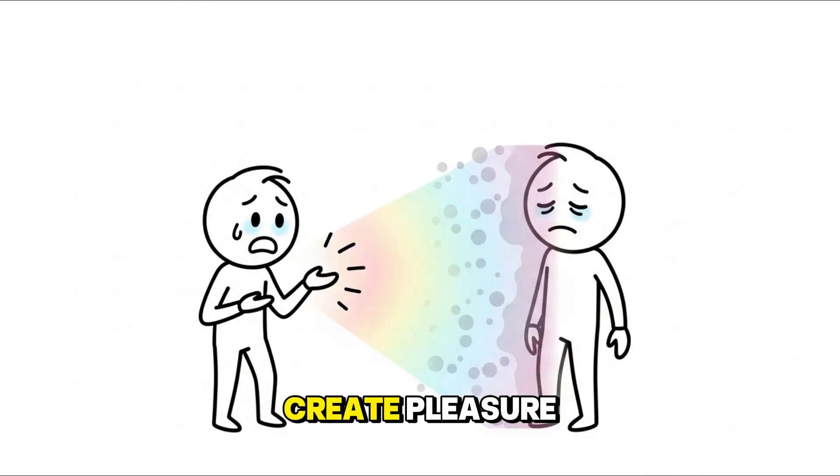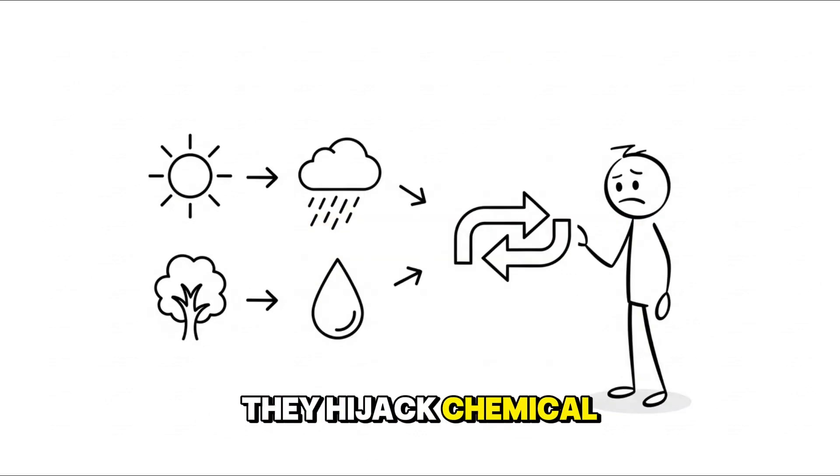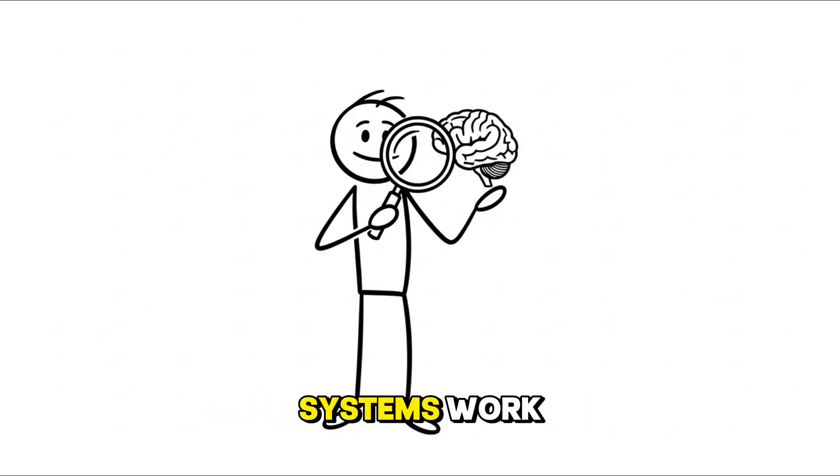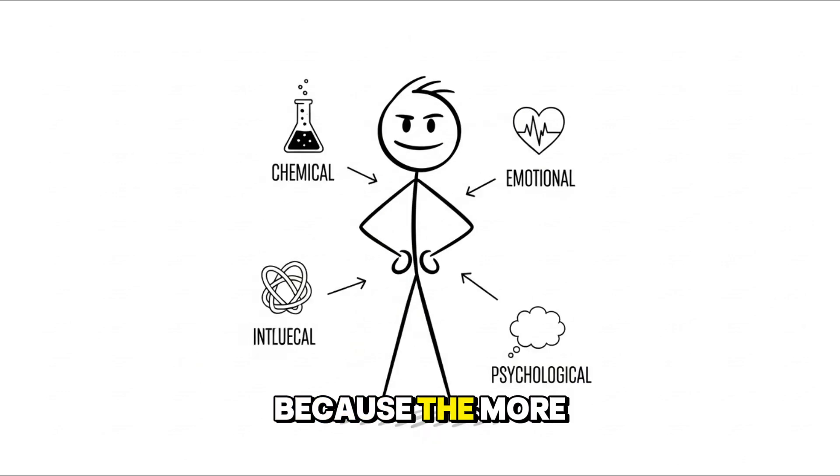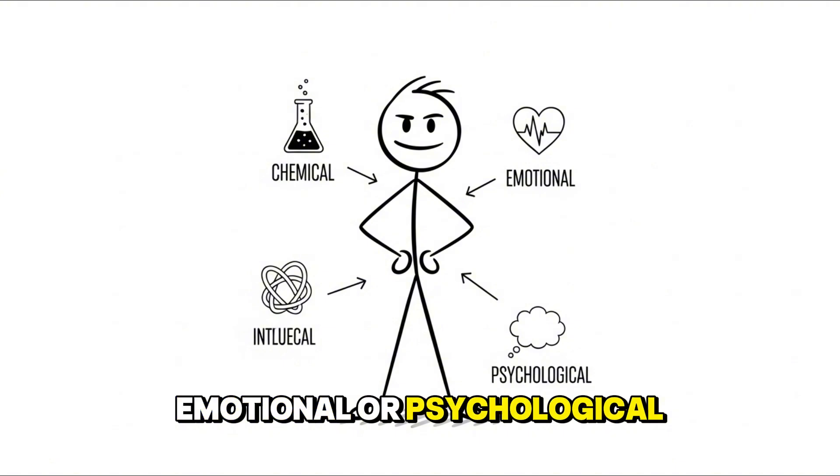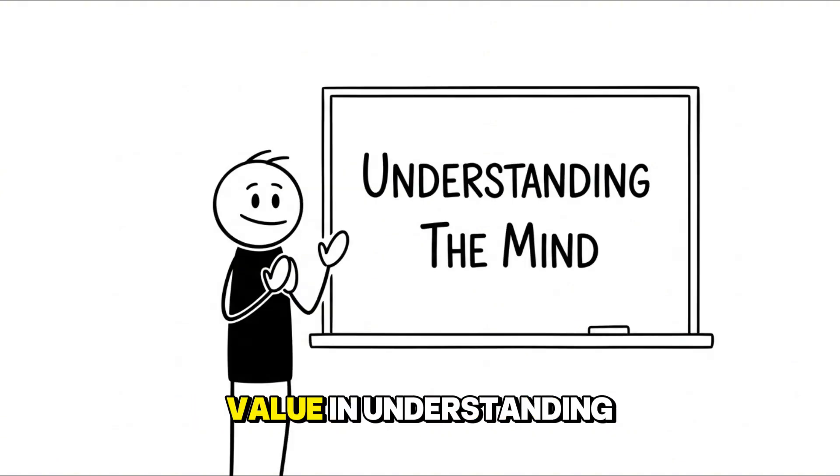Every substance in this list shares one thing in common. None of them create pleasure. They borrow it from the version of you that exists tomorrow. They hijack chemical systems meant for survival, connection, clarity, and rest, turning them into shortcuts with long-term costs. Understanding how these systems work doesn't make you judgmental. It makes you aware. Because the more you understand your brain, the harder it is for anything, chemical, emotional, or psychological, to control you.